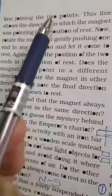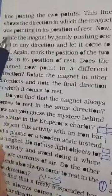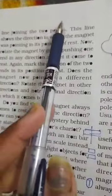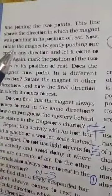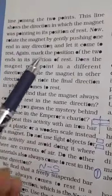Draw a line joining the two points. This line shows the direction in which the magnet was pointing in the position of rest. Then we have to add points which will tell about the magnet's direction.